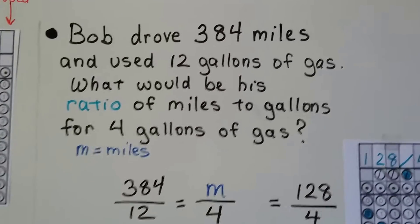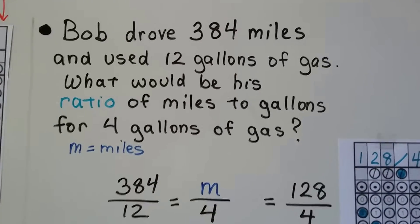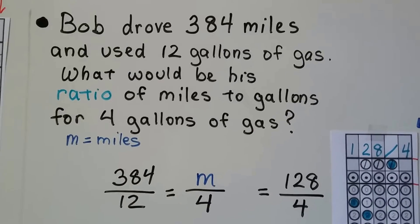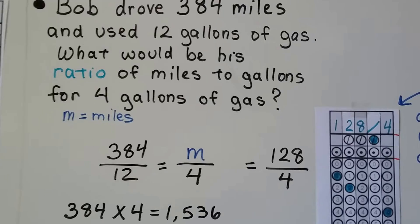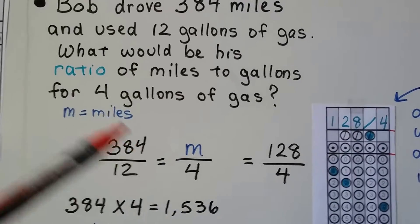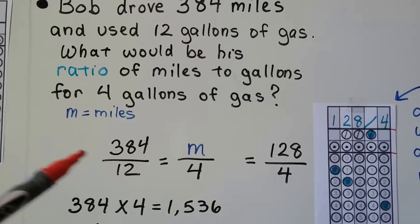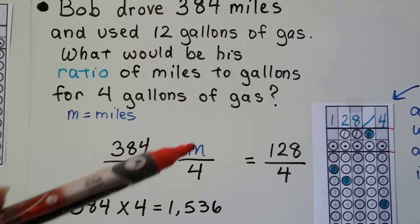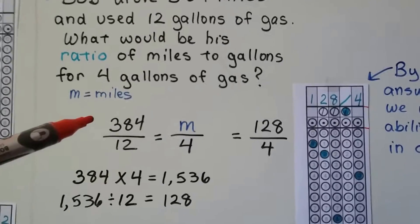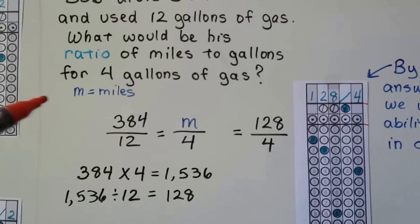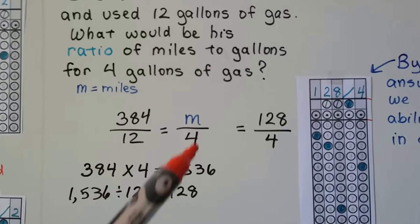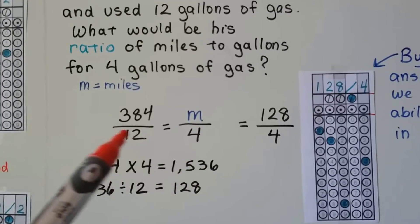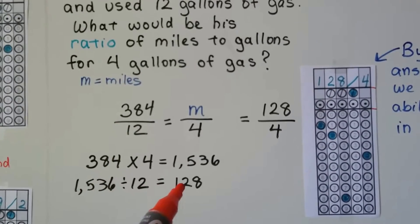So take a look at this. It says Bob drove 384 miles and used 12 gallons of gas. What would be his ratio of miles to gallons for four gallons of gas? So we just learned this in the last video. We're going to use M for miles as our variable. He did 384 in 12 gallons. What would be the mileage for four gallons? So all we have to do is the cross products rule. We can do 384 times four. That's 1,536. That's quick on a calculator and then just divide it by this 12. We get 128.